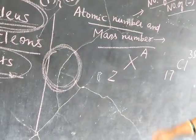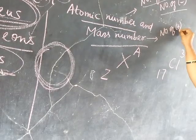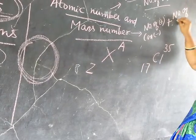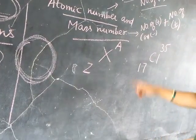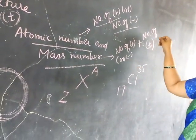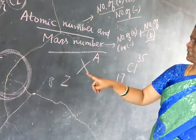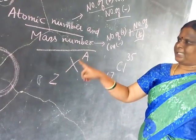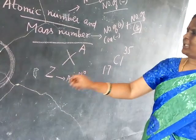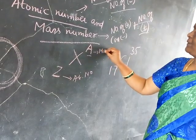That is why we say that the atom is neutral. Coming to mass number — mass number represents the number of protons or electrons plus the number of neutrons. This point is most important. It is represented like this: X is the element, Z is the atomic number, and A is the mass number. Atomic number is represented by the letter Z, and mass number is represented by the letter A.